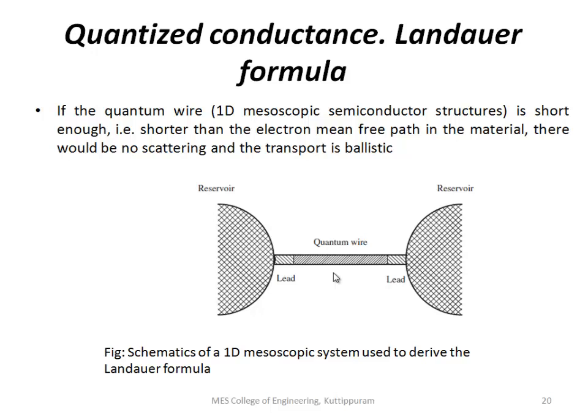The quantum wire is connected to an external circuit through leads and contacts. It is connected through leads to a reservoir. So a one-dimensional mesoscopic system is considered.